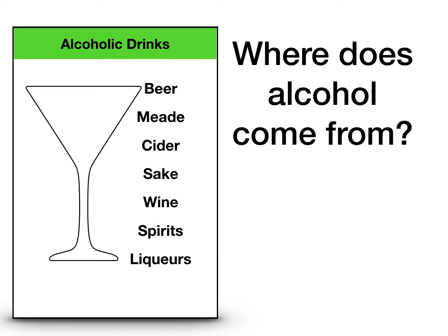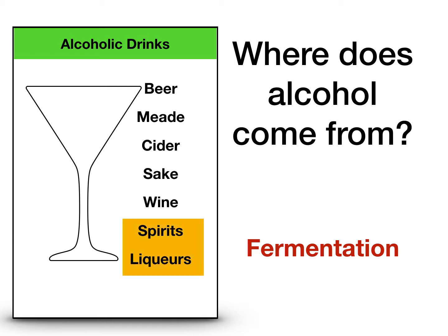To get us started, we want to identify: to have an alcoholic drink, where do we get the alcohol from? It doesn't just show up. The first consideration is the process called fermentation. You may have covered this in other classes, but we'll give you a refresher. The list of alcoholic drinks is made up of both fermented and the next step, called distilled spirits. The course is focused more on spirits and liqueurs, but it's important to understand that we had to start with a fermented beverage, like a beer, cider, or wine.